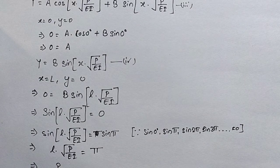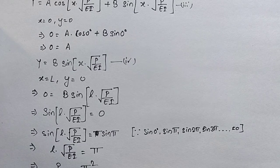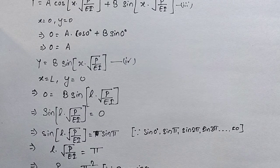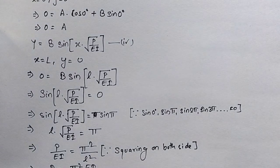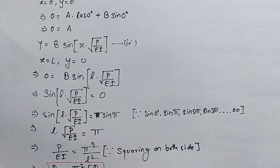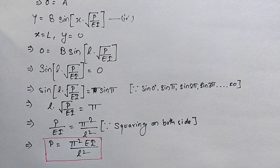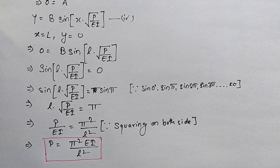From L·√(P/EI) = π, squaring both sides gives P/EI = π²/L², so P = π²EI/L². This is the final equation for calculating the crippling load when both ends of the column are hinged. In the upcoming video I will derive the expression for the crippling load when one end of the column is fixed and the other end is free. Please like and subscribe to the channel.